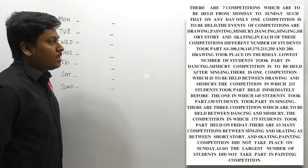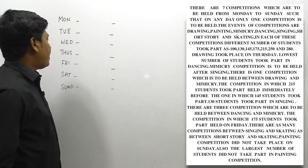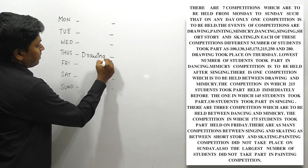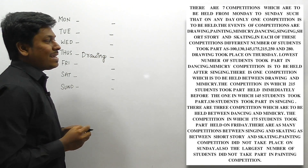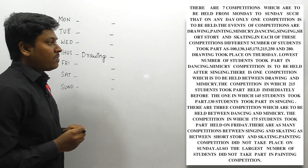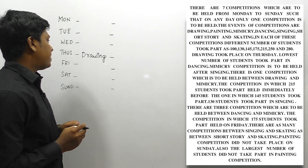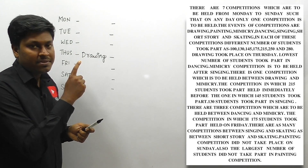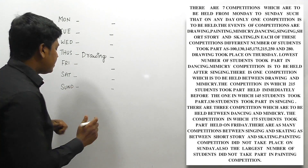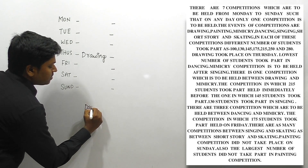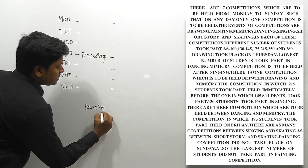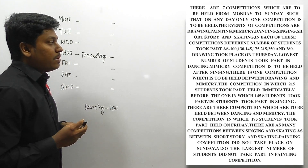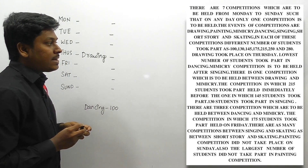First clue: drawing took place on Thursday — that's a direct statement, so drawing is placed on Thursday. Next clue: the lowest number of students took part in dancing. The lowest number is 100, so dancing has 100 students participating.